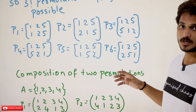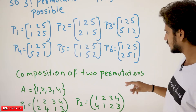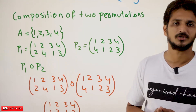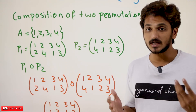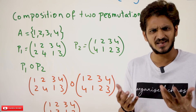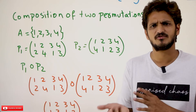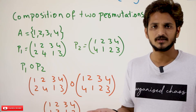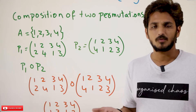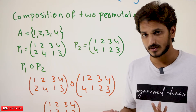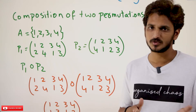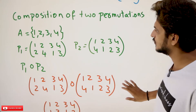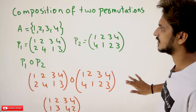So these are the important points you need to understand. The next important point is the composition of two permutations. You take two permutations and apply the composition — it is the same as composition of functions. Permutation is nothing different from a function, so composition of permutations means composition of functions. Whatever way we do function composition, the same way we are going to do permutations also.